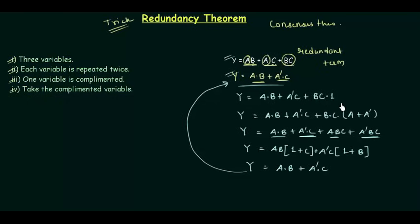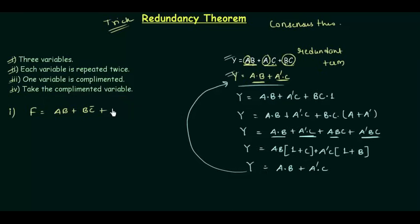You can also prove it using the truth table, but that is easy and you can do it yourself. Now let's solve a few examples on the redundancy theorem. Example number one: the function f is equal to a·b or b·c-complement or a·c.